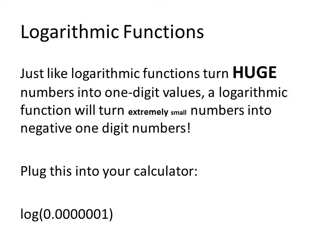Just like logarithmic functions can turn huge numbers into one-digit values, a logarithmic function will also turn extremely small numbers into one-digit numbers. Try plugging this into your calculator: the log of 0.0000001. This, of course, is a very small number. When you plug that into your calculator, you're simply going to get the value negative 7. So we can see that a logarithm is going to change a really small number into just a one-digit number.